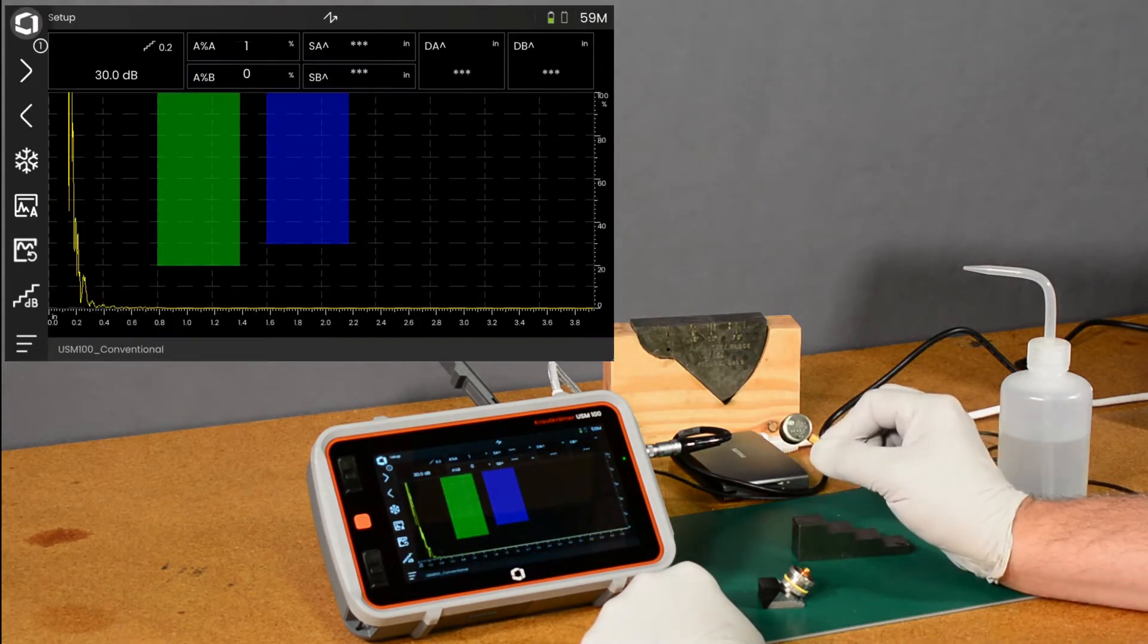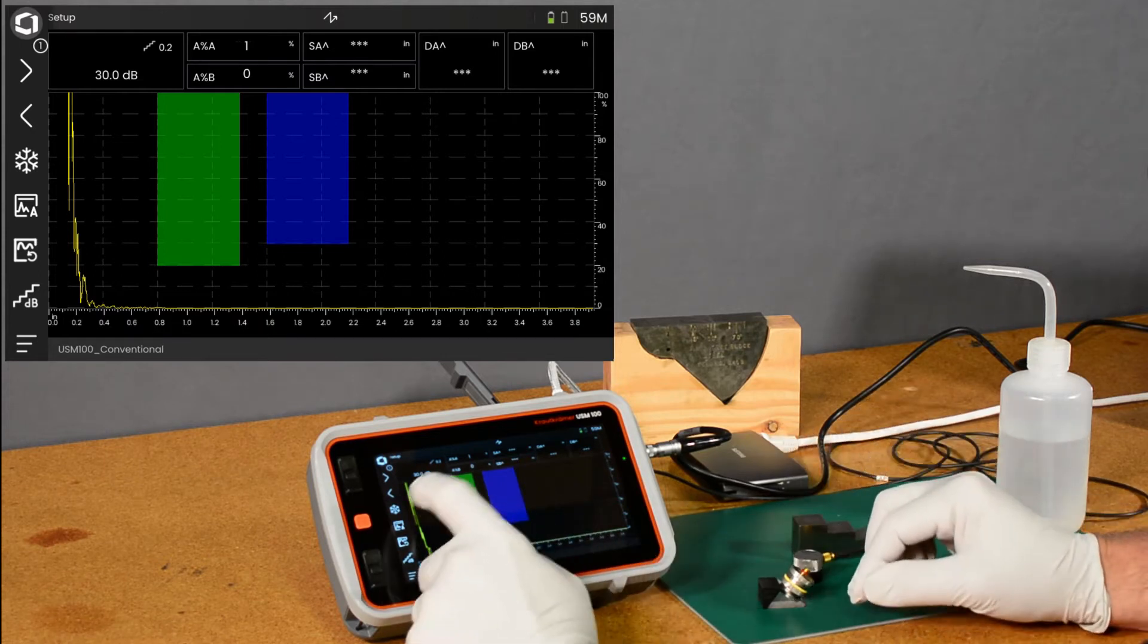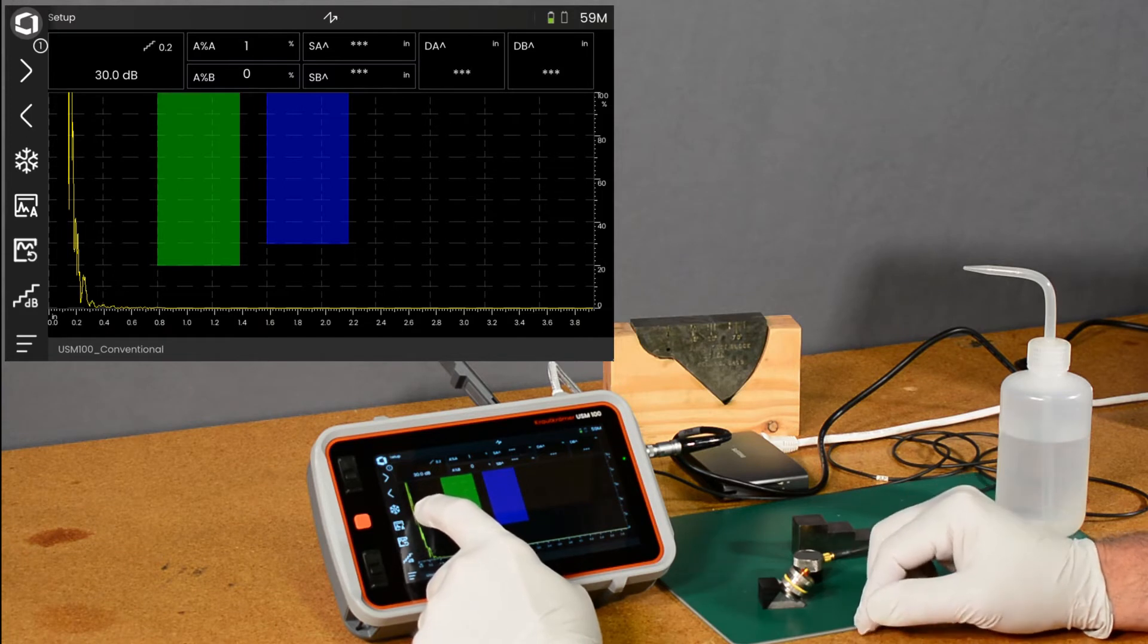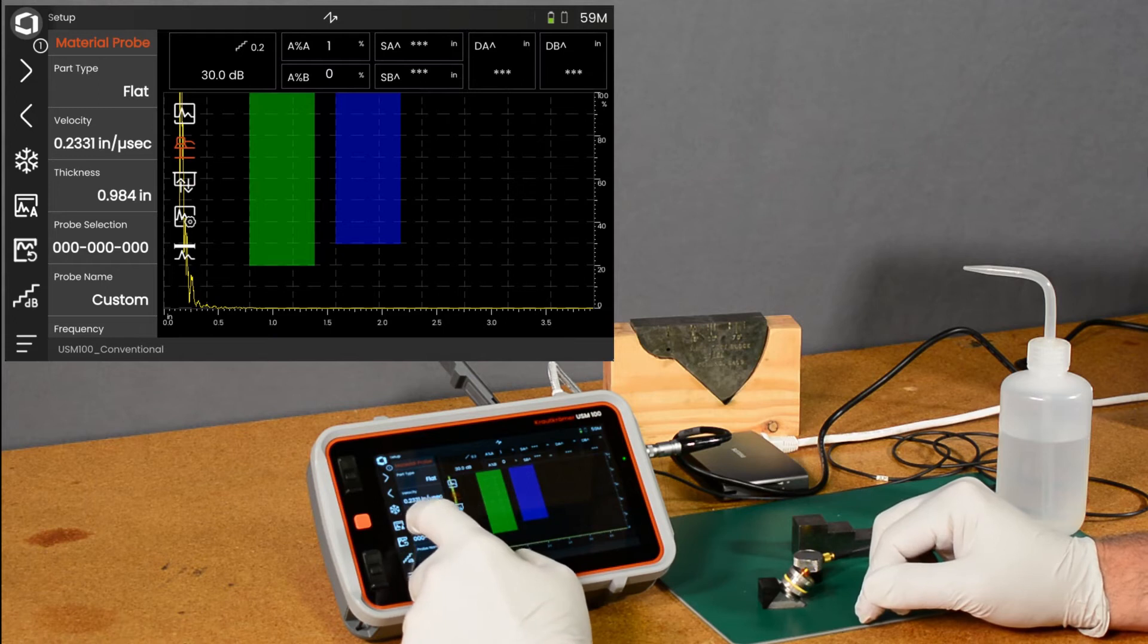I've selected a 5 MHz gamma probe, so there's not a lot to change about the probe setup on this. The default value is already 5 MHz,